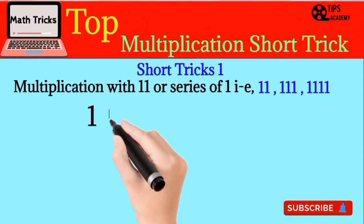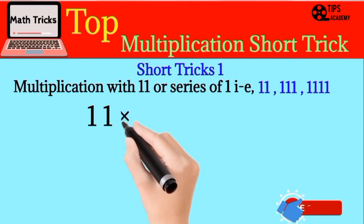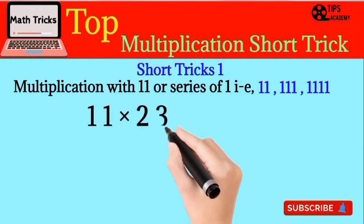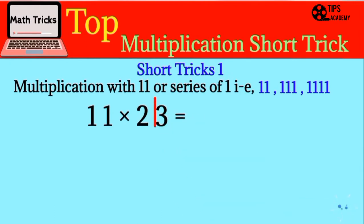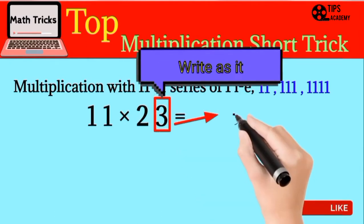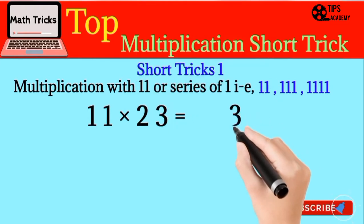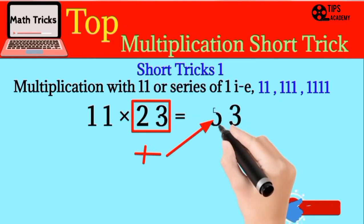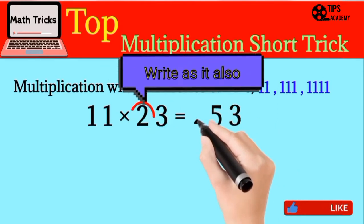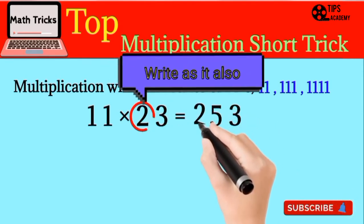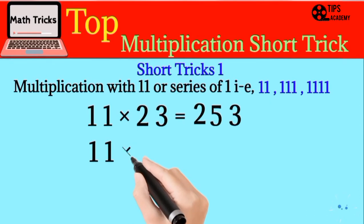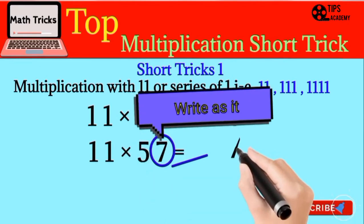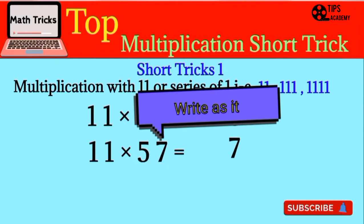For example, we want to multiply 11 with 23. According to this trick, we will write the first element as it is, then 3 will be written as it is. After that we will add these two numbers and write them, and the last number will be written as it is. Take another example: 11 multiplied by 57. We will write 7 as it is.